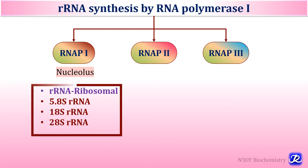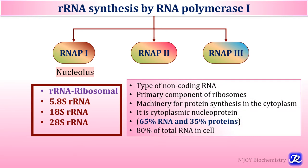Ribosomal RNAs are non-coding RNAs and are primary components of ribosomes. Ribosomes are machinery for translation, that is protein synthesis, which occurs in the cytoplasm. These ribosomes are cytoplasmic nucleoproteins because they are made up of RNA as well as proteins. 65% of ribosomes are ribosomal RNAs and 35% is protein, and ribosomal RNA constitutes 80% of total RNA present in the cell.